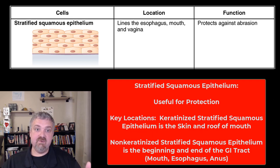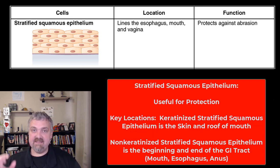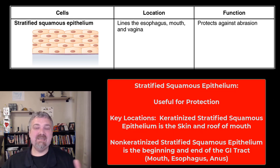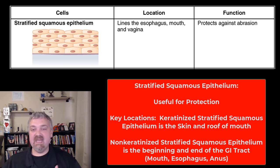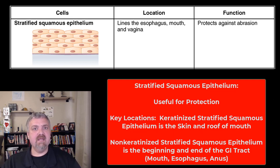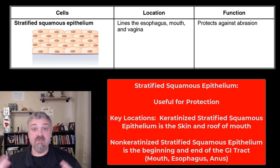The other type — regular or non-keratinized stratified squamous epithelium — is very tough and resists abrasion, but it needs to be constantly lubricated. So think about the beginning and end of your GI tract as the key examples: the mouth and the throat, and on the other end the anus. The vagina is also going to be stratified squamous epithelium.